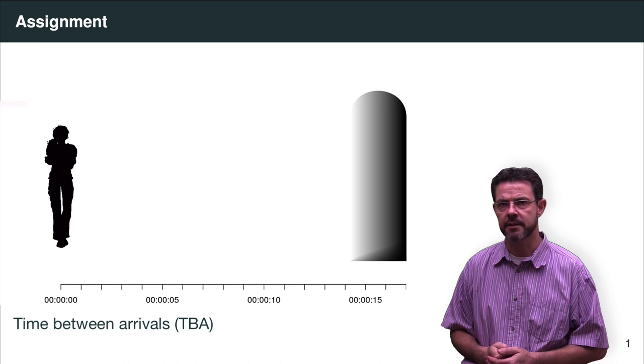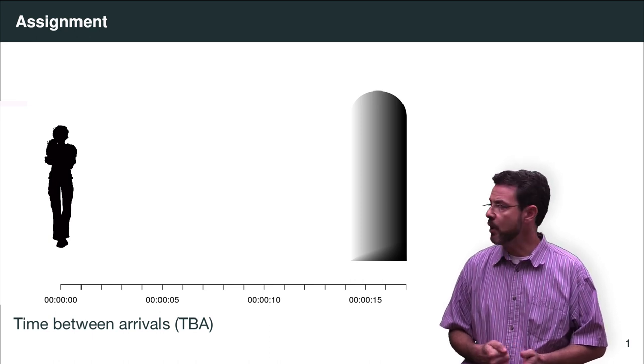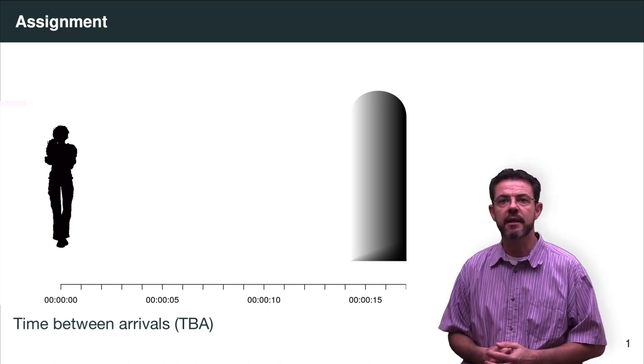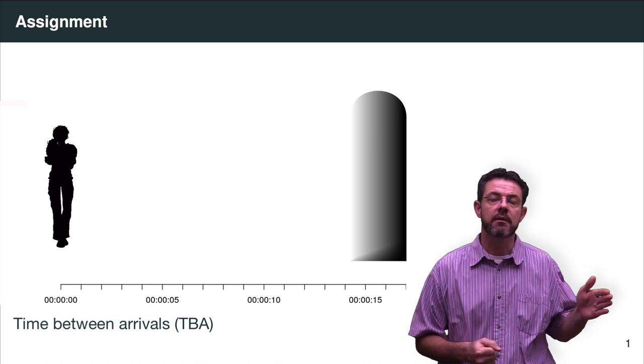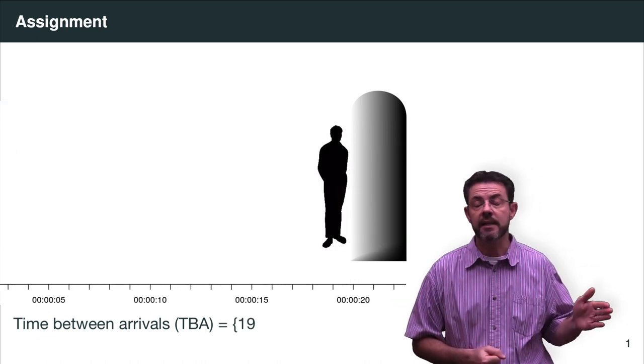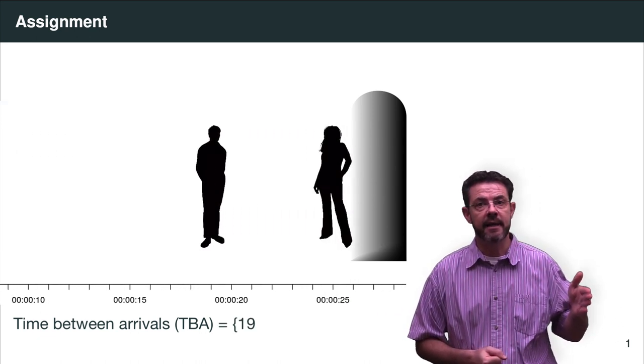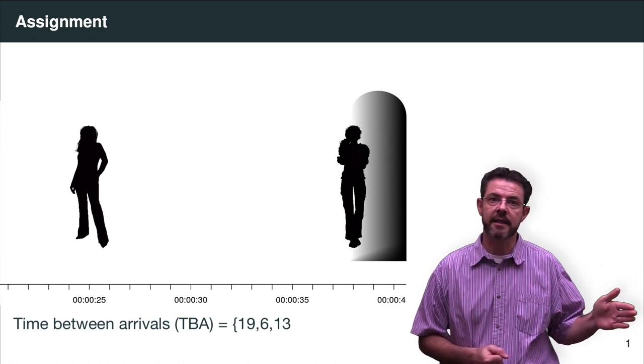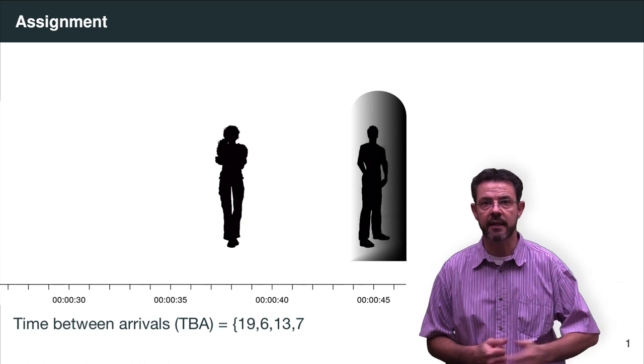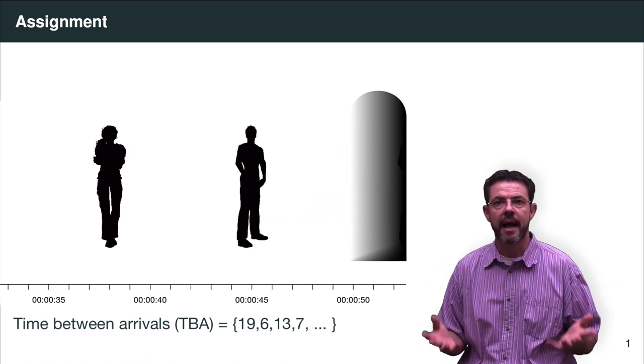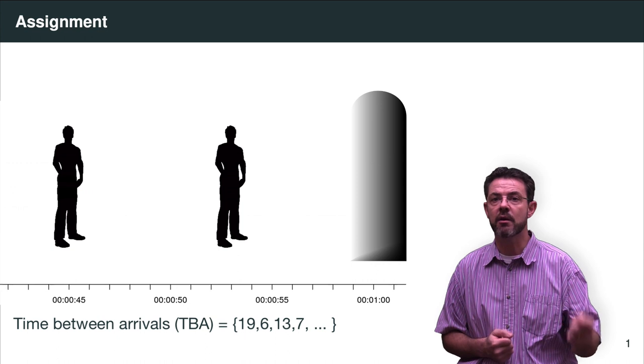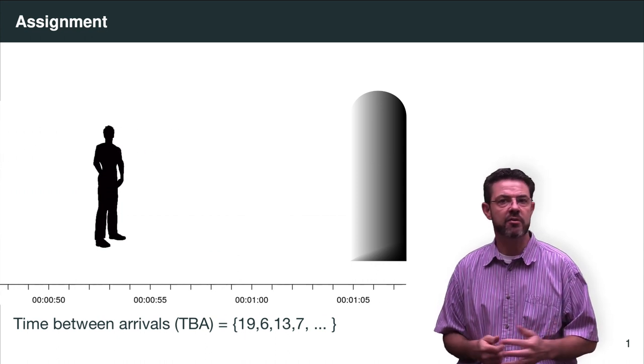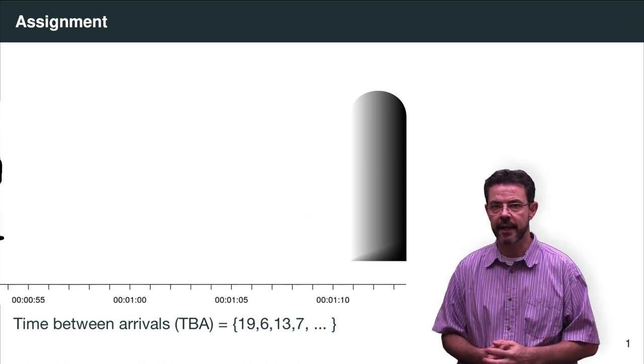From when the first lady arrives, you will see that 19 seconds later the next individual arrives, and then six seconds later, and then 13 seconds later, and then seven seconds, and so on. You will have to record all of these time between arrival values, and you can just round them to the closest one second.